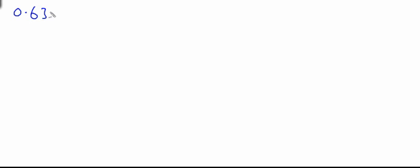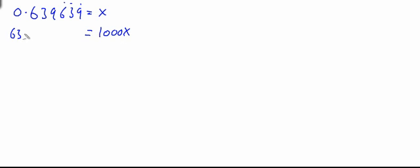Now to come back to what I said before — I'd like to prove that the trick with the number of zeros on the multiple of 10 and the number of digits in the repeated unit actually works. We're going to use a 3-digit repeated unit recurring decimal: 0.639 recurring. This has 3 repeated digits, so we multiply by 1000 this time, not 100. So this equals x, and we multiply by 1000.